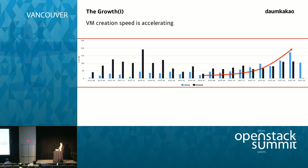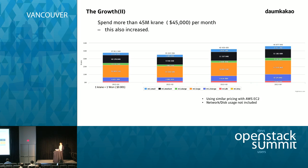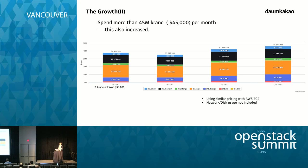But right after we stabilized our service, the VM creation rate got high, and the depletion rate also accelerated. I changed those numbers into a more tangible value, which is prices. We call it 'crane' because our service name is crane. The crane unit is equivalent to the Korean won, which is equivalent to $0.1. Right now we are using $40,000 per month, according to the AWS equivalent pricing table — but that doesn't account for network and disk usage at all.